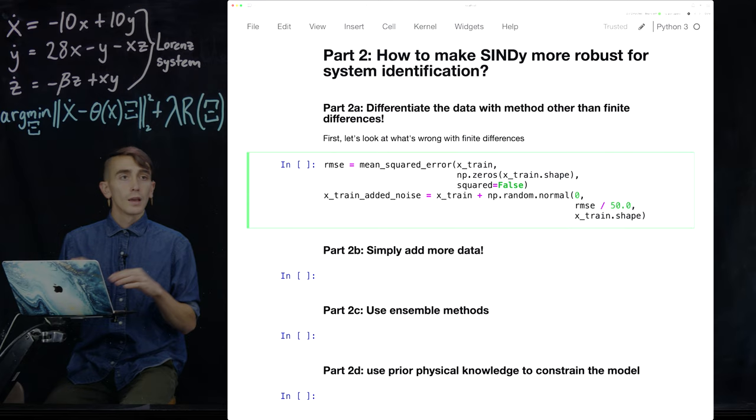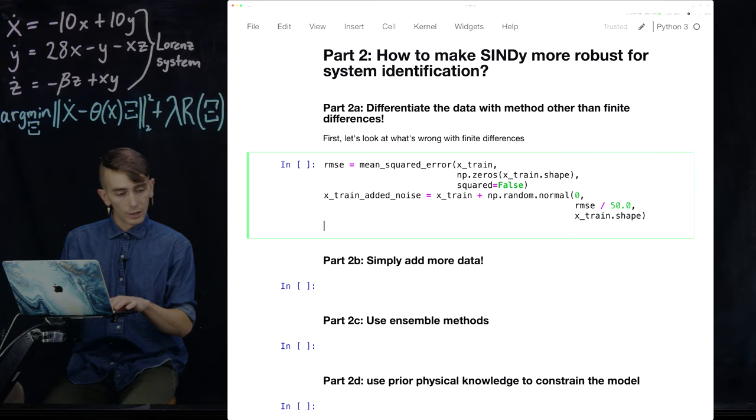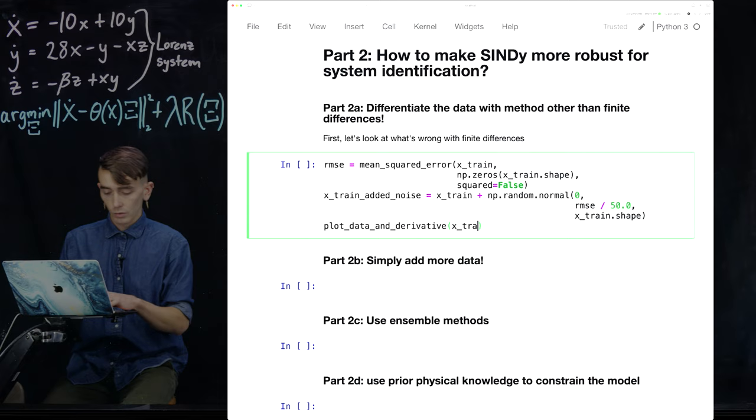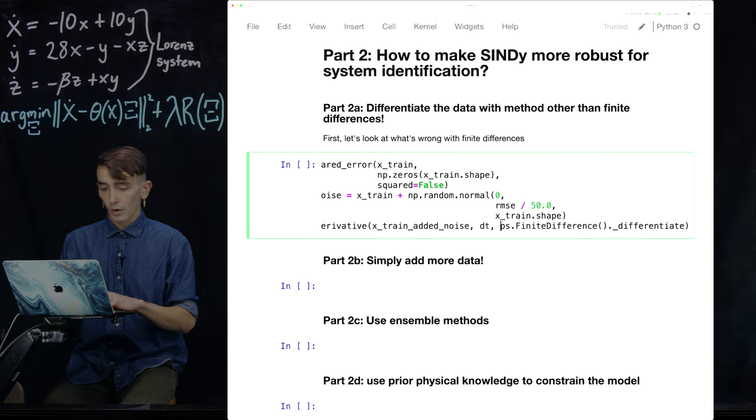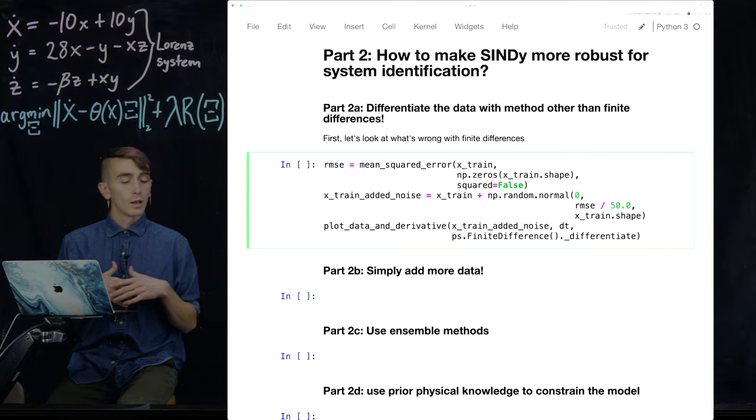And then we're just going to do a normal thing. We're going to plot data. Let's just plot what that looks like. So I have this function plot_data_and_derivative x_train_added_noise dt. If I can spell correctly. Okay, right. So this is just going to plot the noisy training data with this 2% added noise and its derivative.